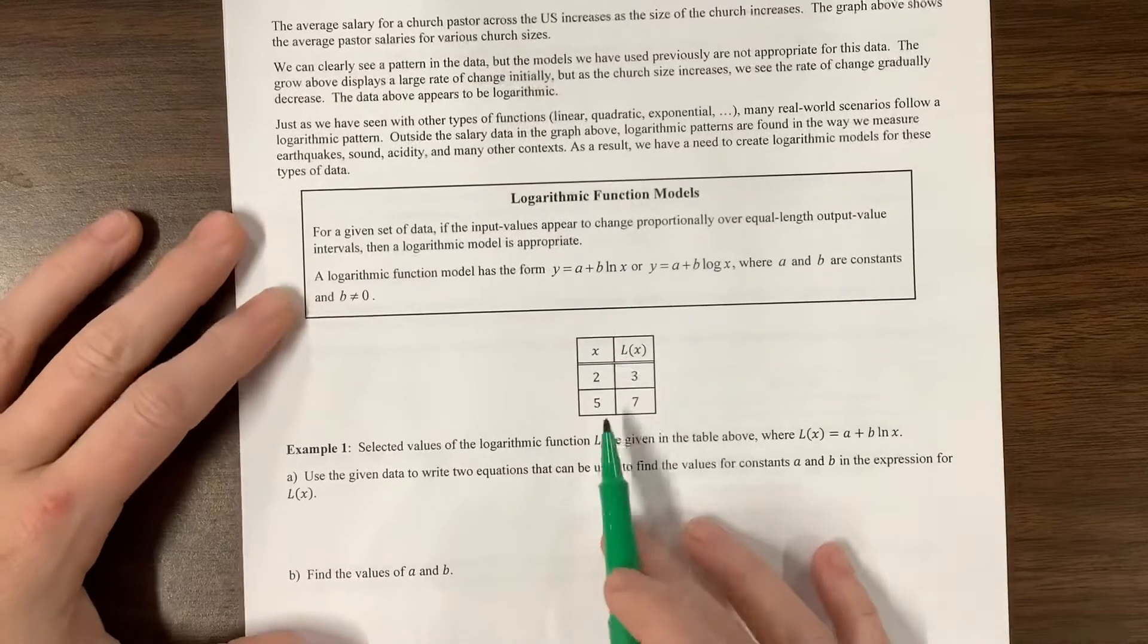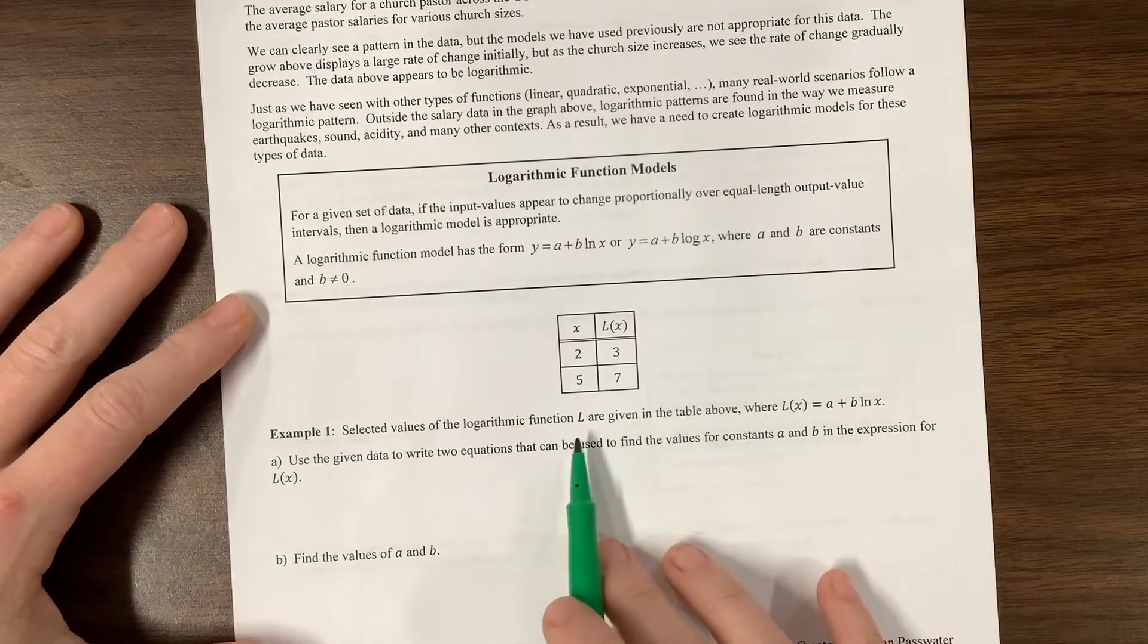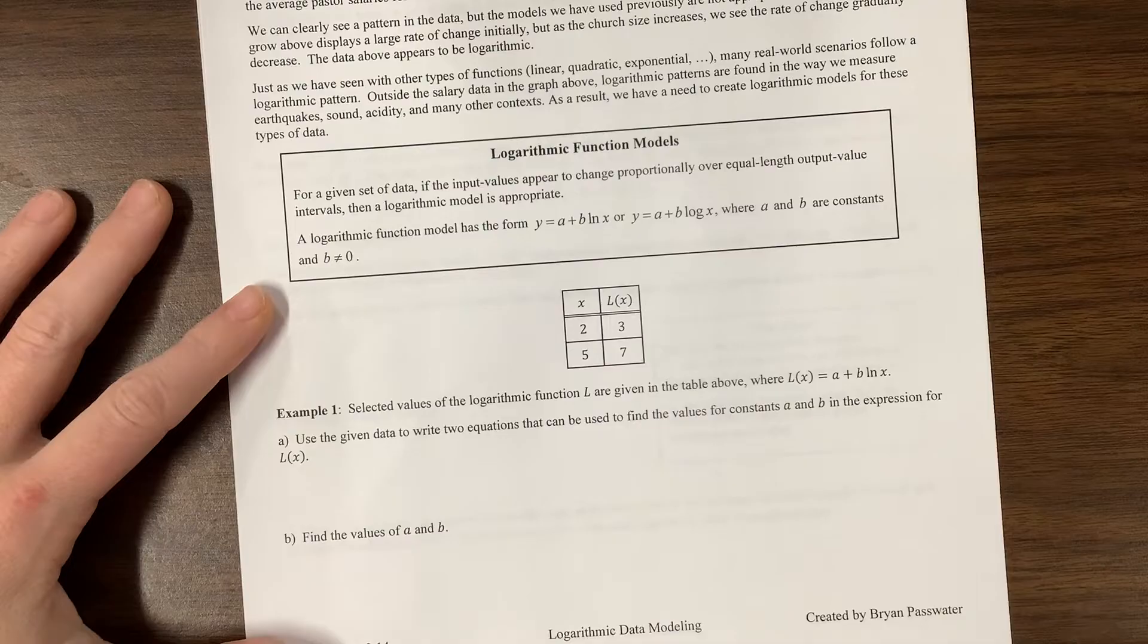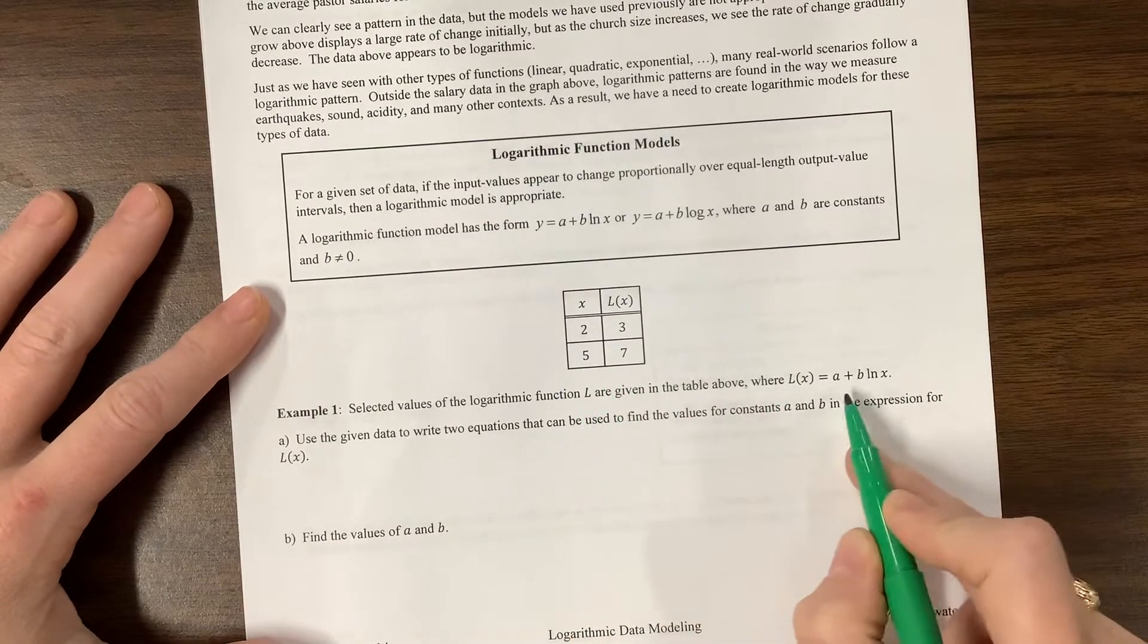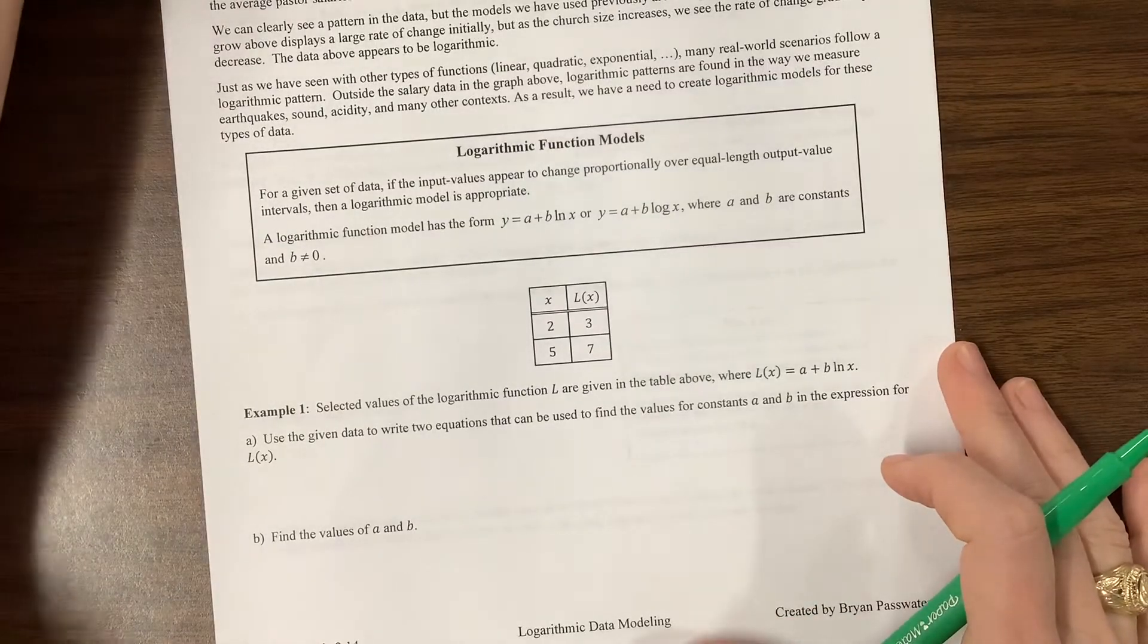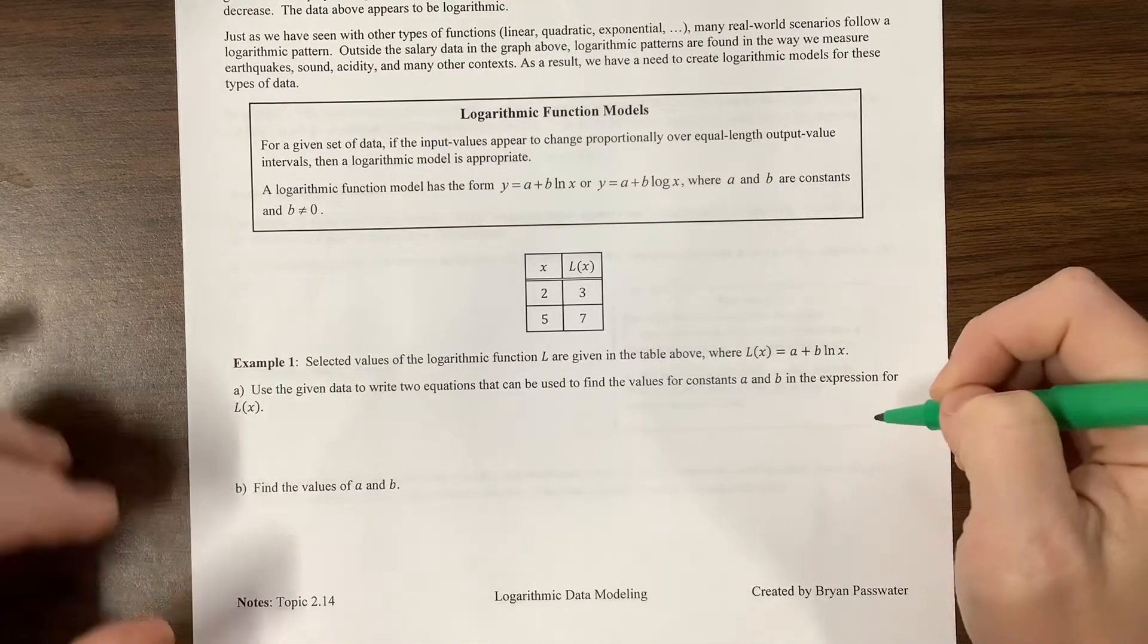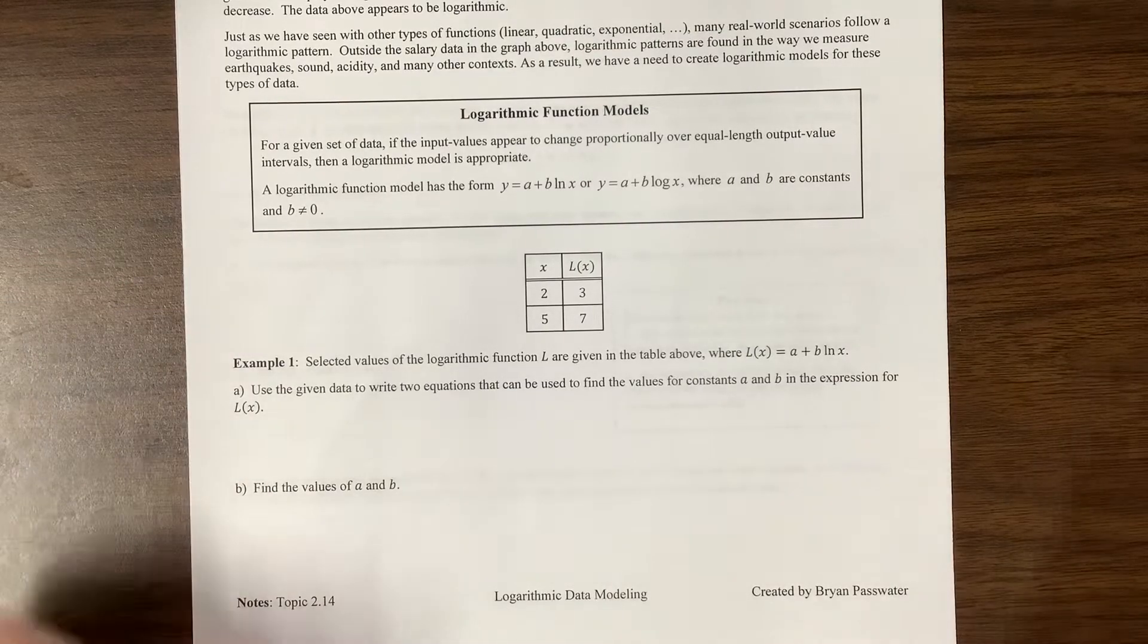In this one, they're telling us that this data can be modeled with the equation L(x) equals A plus B times the natural log of x. When I see natural log and then I see x values of 2 and 5, I know that my A and B values are going to be kind of gross. Let's jump in and we're going to find the exact value and then we're going to also find it with the calculator and see how we can look at both of those.